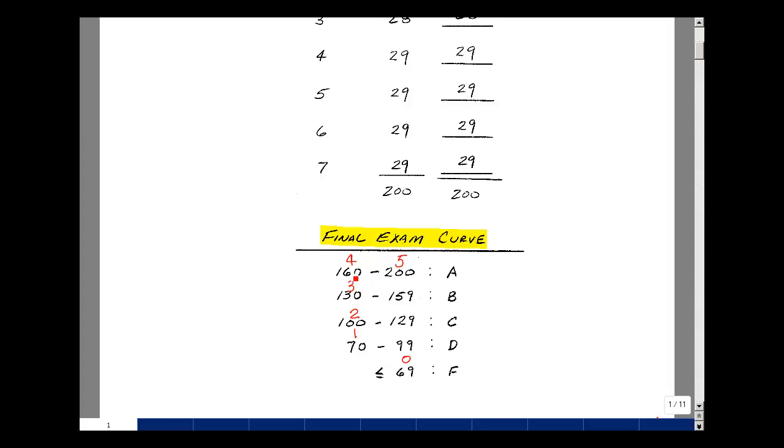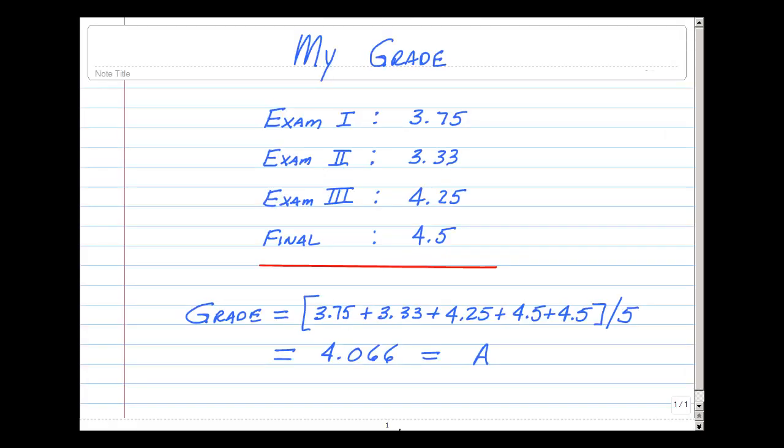Suppose that you're a quarter of the way between 160 and 200. Well then you have a 4.25. Suppose you're three-quarters of the way between 130 and 159. Well you have a 3.75. Let me show you how to put this together into a final grade. Suppose on exam one you did get a 3.75. In other words, this would be three-quarters of the way between the 3-point and the 4-point grade. Maybe you didn't do so well in the second exam and had a 3.33. Again, a third of the distance between the 3-point and the 4-point. Maybe on the third exam you did better and you're about a quarter of the way between 4 and 5. Suppose on the final you did really well and you were halfway between the 4-point and the 5-point.